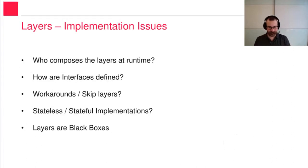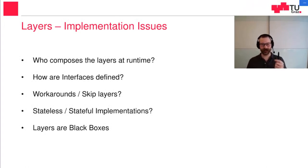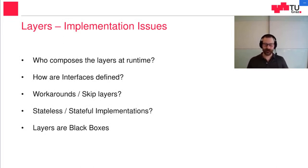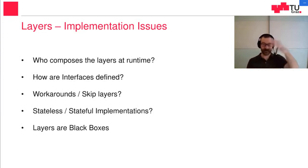Coming to some implementation issues: who composes the layers at runtime? Who is responsible for saying this will be the top layer, this will be the next layer, these components will be in the next layer, and so on? This is not defined by the layers pattern — you have to decide that. Then how are the interfaces defined? What about workarounds? Sometimes, if you want to have high performance, you want to skip layers. How do you do it in a structured way so that you don't break up all your layer structure?